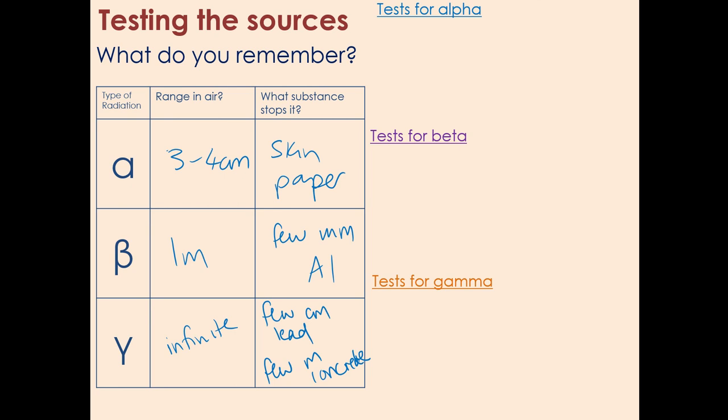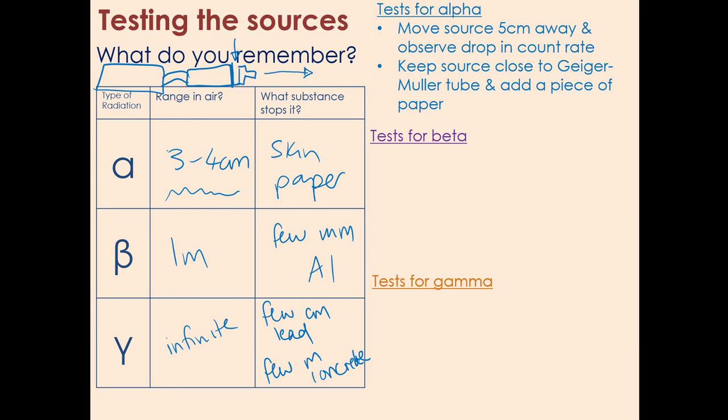When it comes to doing this experiment there's a couple of things that you can do. You can either keep your Geiger-Muller tube and put different things in between the source and the Geiger-Muller tube when they're really close together, or you can move the source so that there's different amounts of air between the source and the Geiger-Muller tube. With alpha then, if we move the source five centimeters, so more than this range away from the Geiger-Muller tube, and we notice a big drop in the count rate, that must mean it's an alpha source. The other thing that could tell us it was an alpha source is if we kept the Geiger-Muller tube really close to the source but just putting a piece of paper made the count rate drop.